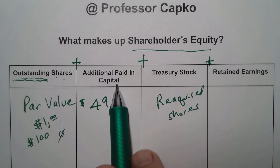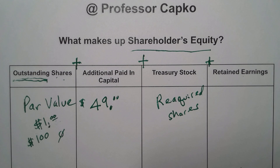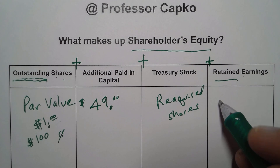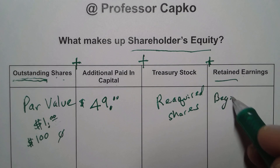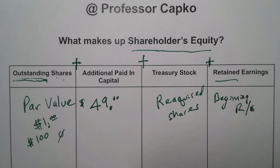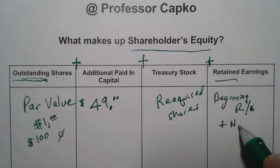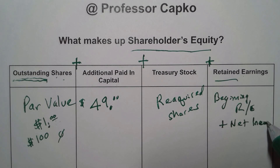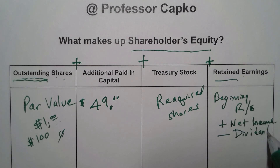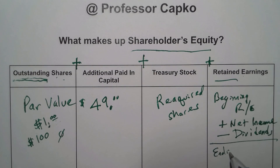The last component making up the bulk of shareholders equity is retained earnings. This is the amount of money left over after all the bills are paid, including dividends. You start with beginning retained earnings — at the beginning of a company's life that would be zero since it didn't earn anything the year before. Then you add net income for the year and subtract any dividends paid out to investors or owners. What's left over is your ending retained earnings.